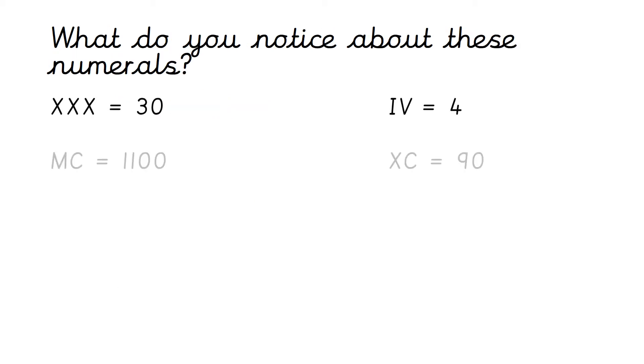So what do you notice about these numerals? So we've got XXX which is 30. We've got MC which is 1100. We've got LXV which is 65. IV which is 4. XC which is 90. And CD which is 400. Just have a look. What do you notice about the different numerals?